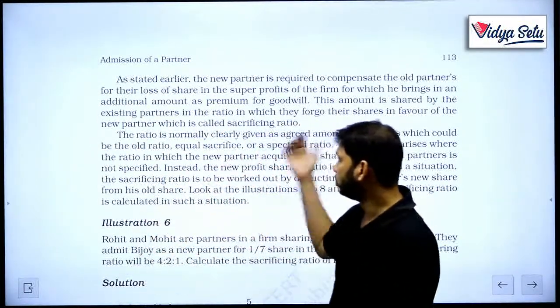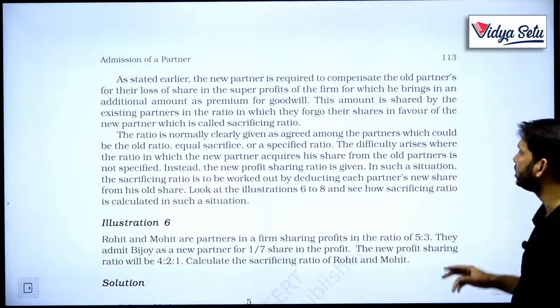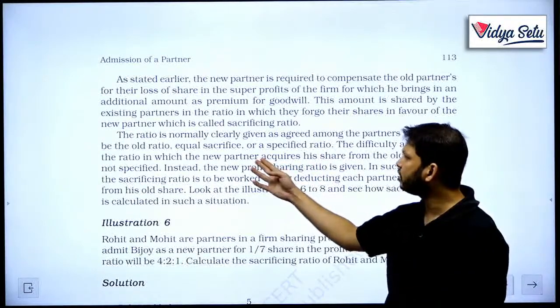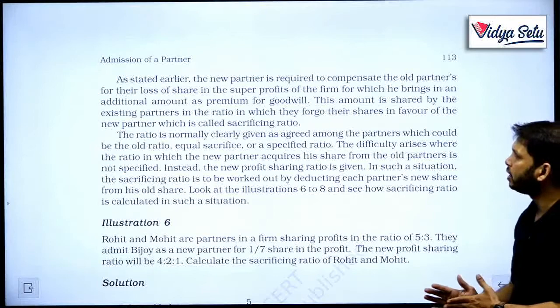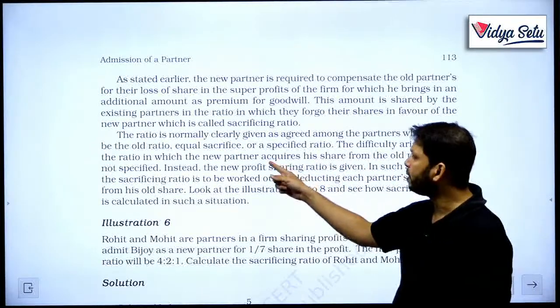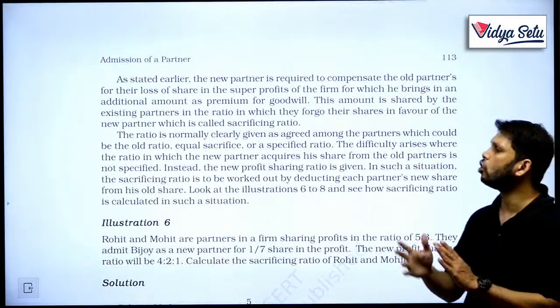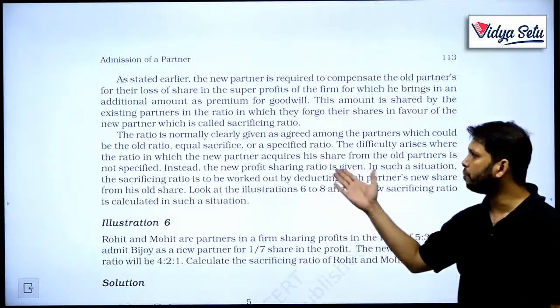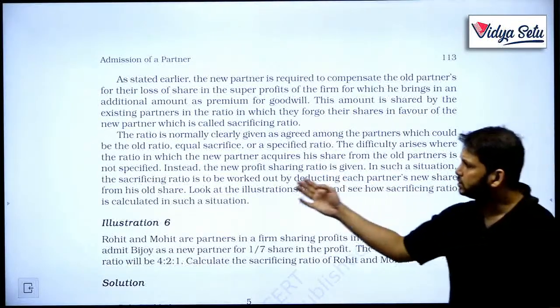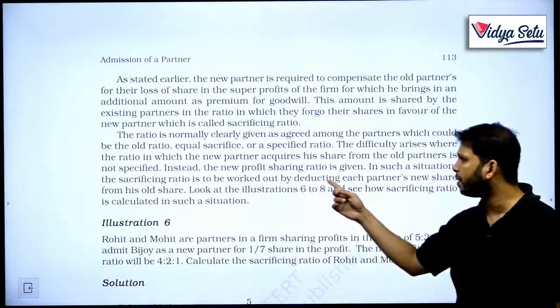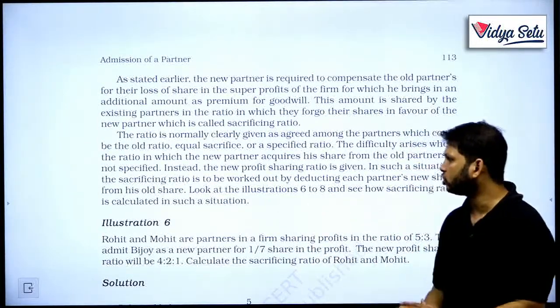So to do that, the new partner will compensate them, thank them. So the ratio is normally clearly given as agreed among the partners, which could be the old ratio, equal sacrifice, or specified ratio. The difficulty arises where the ratio in which the new partner acquires his share from the old partners is not specified. Instead, the new profit sharing ratio is given. In such a situation, the sacrificing ratio is to be worked out by deducting each partner's new share from his old share.